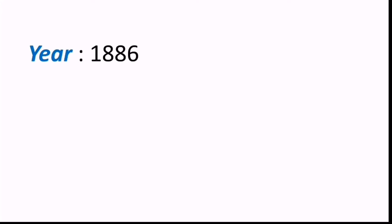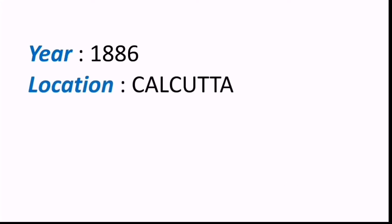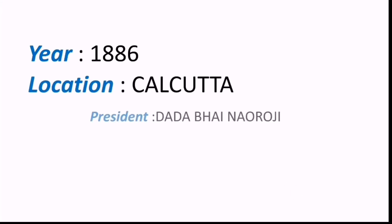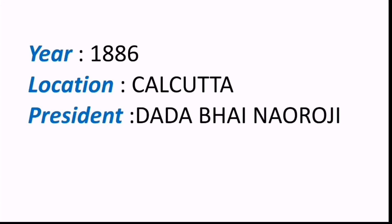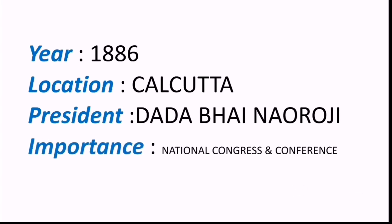Moving on to the second session, in the year 1886, location at Calcutta, President was Dadabhai Naoroji. Its importance is that the National Congress and National Conference were merged together.